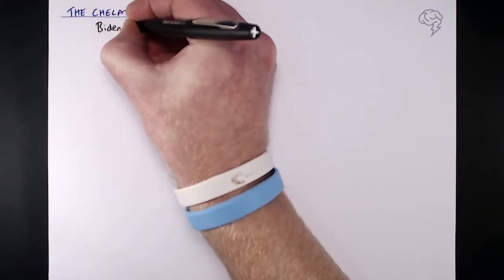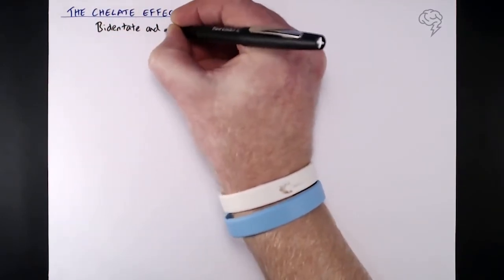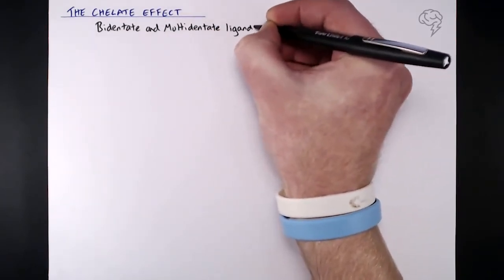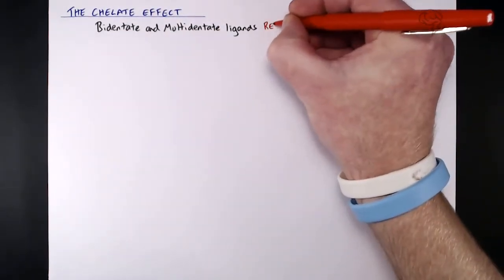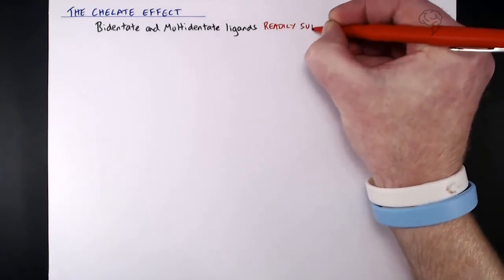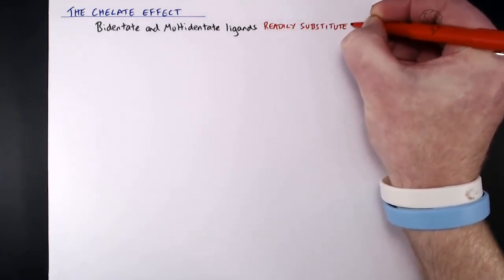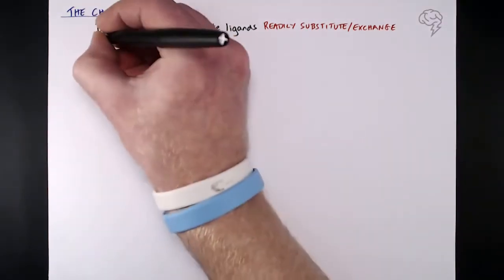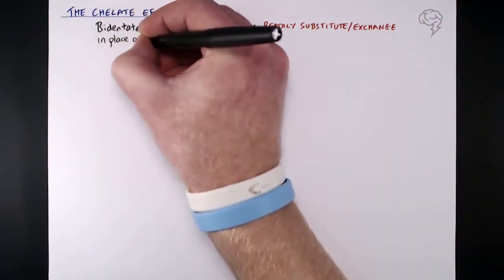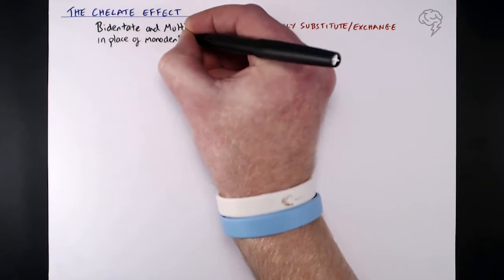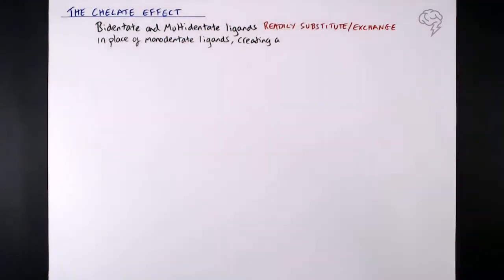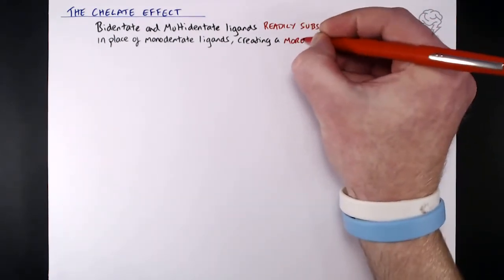But what is it? Well we find that bidentate and multidentate ligands readily substitute or exchange in place of monodentate ligands. So if you have a hexa-aqua-ion, and you put a bidentate ligand near it, they're going to swap out. So it prefers to have or be with bidentate or multidentate ligands.